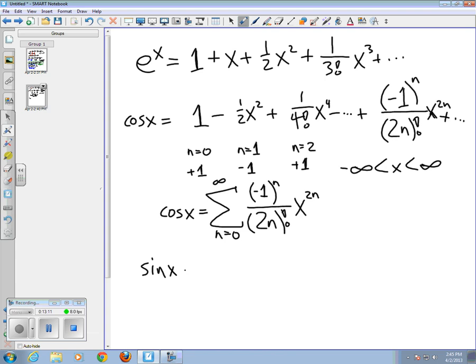So, the series for sine x looks like x minus 1 over 3 factorial, x to the third, plus 1 over 5 factorial, x to the fifth, minus, and then dot, dot, dot. And so, what does our general term look like?